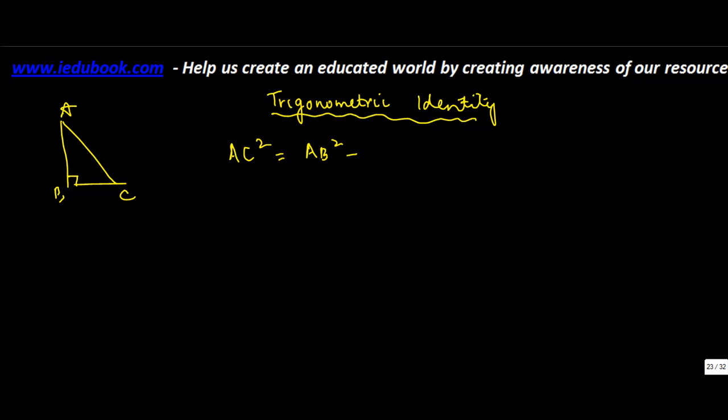Pythagoras theorem. So in a right angle triangle, we know that the hypotenuse square, which is AC, AC square, is equal to perpendicular square AB square plus base square BC square.